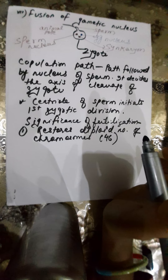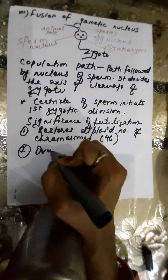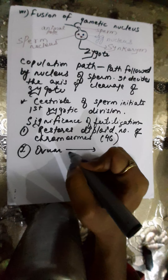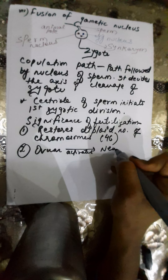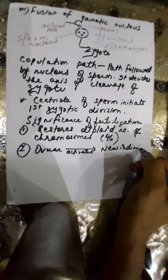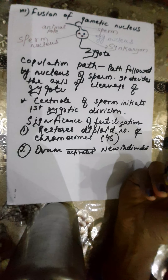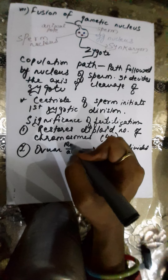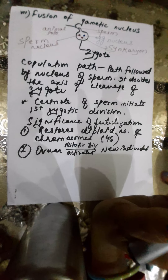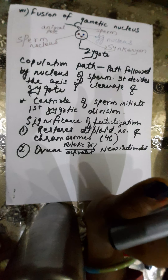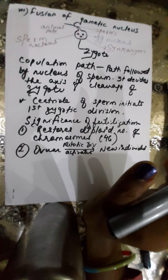Second, it activates the ovum to develop into a new individual. How? Through repeated mitotic division. So it activates the ovum to develop a new individual with the help of mitotic division.